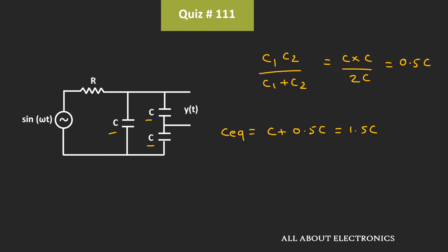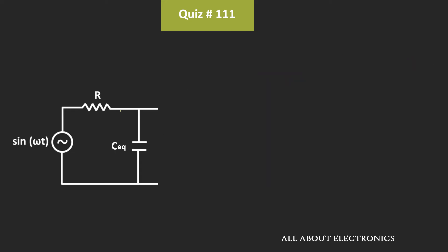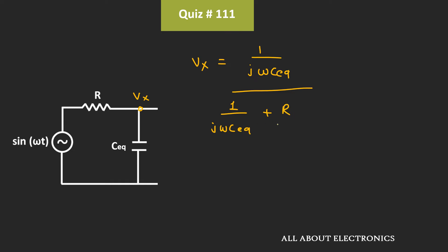If you see the equivalent circuit, it will look like this. Let's say the voltage at this node is equal to Vx. This voltage Vx can be given as 1 divided by jωC_eq, divided by 1 plus jωC_eq, plus R. Or if we simplify it, we can write it as 1 divided by 1 plus jωRC_eq. So this will be the voltage Vx.